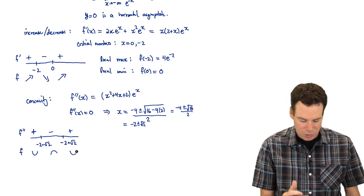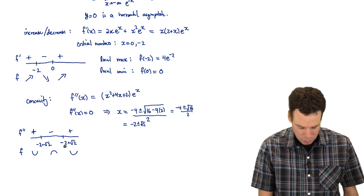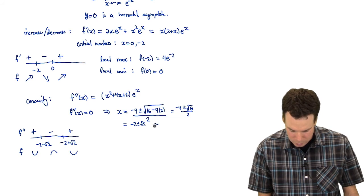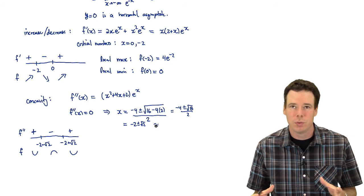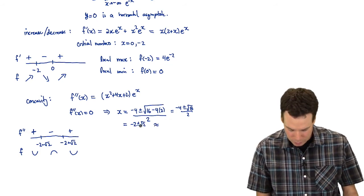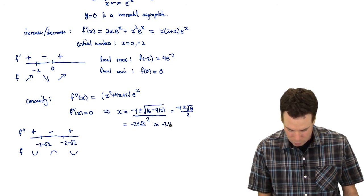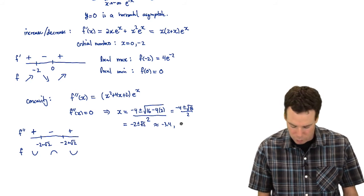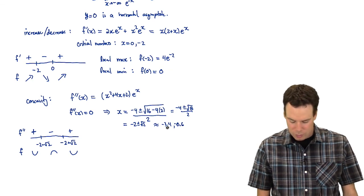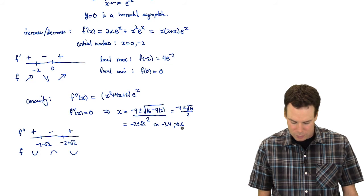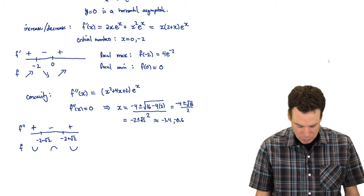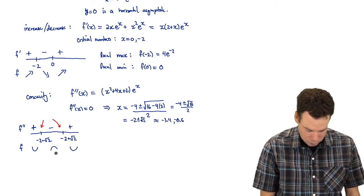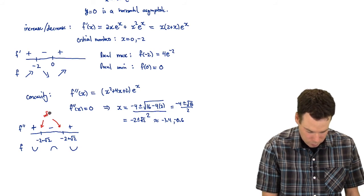To place the inflection points on the number line, I need rough approximations: √2 ≈ 1.4, so −2 − √2 ≈ −3.4 and −2 + √2 ≈ −0.6. The function switches from concave up to concave down at −2 − √2, and from concave down to concave up at −2 + √2. Both are inflection points, sitting symmetrically on either side of the local max at −2.